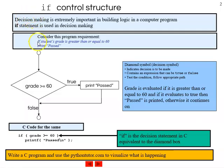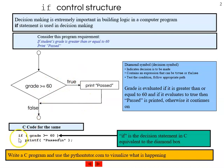Let us look at this particular program. If the student's grade is greater than or equal to 60, print 'passed', else it has to print 'fail'. There is a condition being checked. In a C statement: if grade is greater than or equal to 60, then printf passed. Decisions are required in programs; it is very important to build logic in a computer program. In C, the 'if' statement is used for taking decisions.